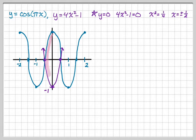And so we know our intersection points that give us our region are going to be at negative 1 half and 1 half. So those are going to be the bounds for our integral.